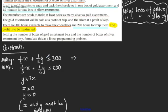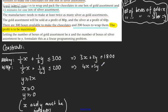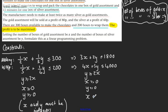Let's tidy up the constraints. Multiplying the making inequality by 6 gives 3x plus 2y is less or equal to 1800. Multiplying the wrapping inequality by 20 gives 4x plus 5y is less or equal to 4000. We also have y greater or equal to 2x, x greater or equal to 0, y greater or equal to 0, and x and y are integers.